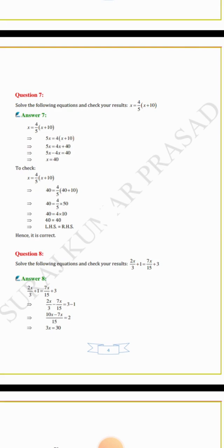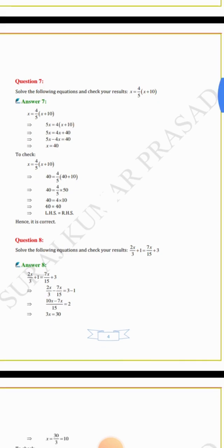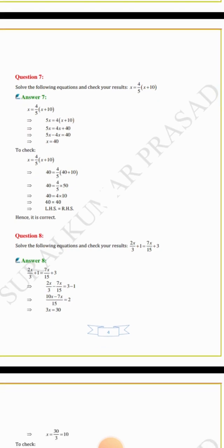To check, keep x equals 40: x = (4/5)(x + 10) gives 40 = (4/5)(40 + 10) = (4/5) × 50 = 4 × 10 = 40. So 40 equals 40, LHS equals RHS, hence it is correct.